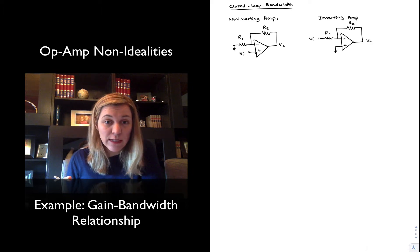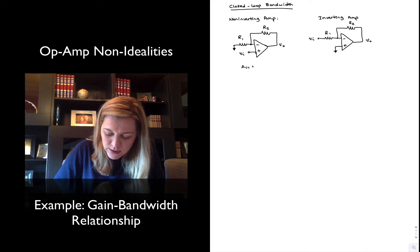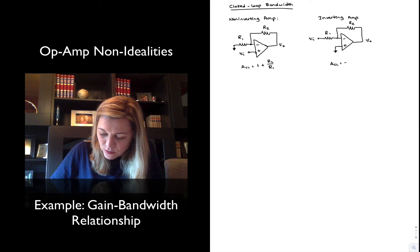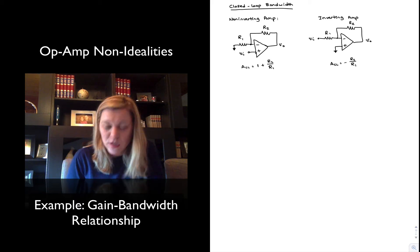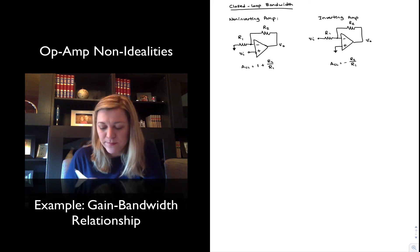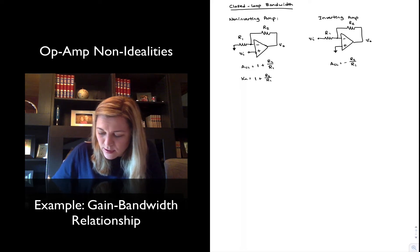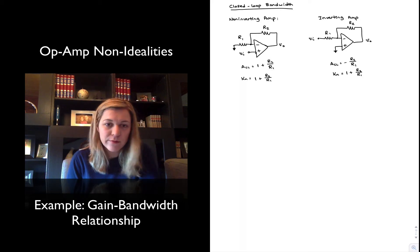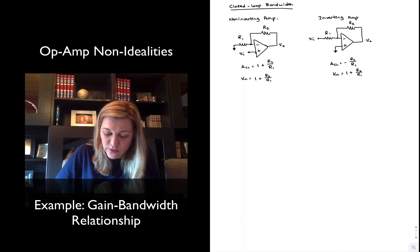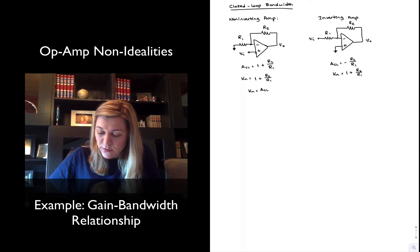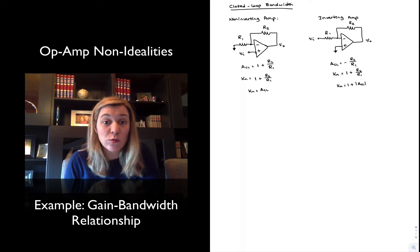The signal gain for a non-inverting amplifier, ACL, is equal to 1 plus R2 over R1, whereas for the inverting amplifier the signal gain is negative R2 over R1. They both share the same noise gain: 1 plus R2 over R1 for both. So for the non-inverting amplifier, the noise gain equals the closed-loop gain, and for the inverting amplifier, the noise gain equals 1 plus the absolute value of the closed-loop signal gain.